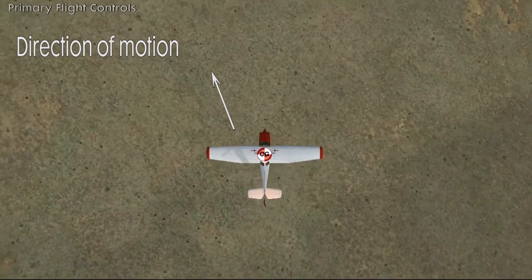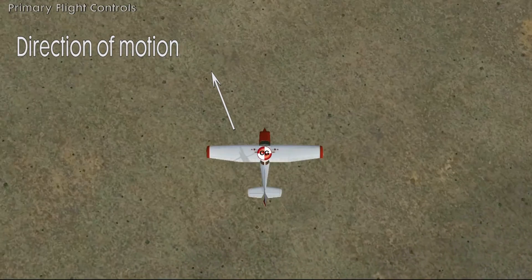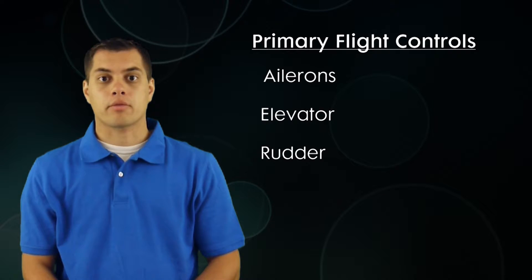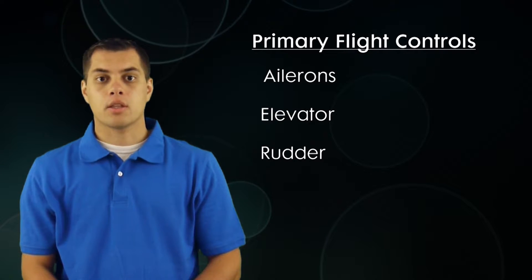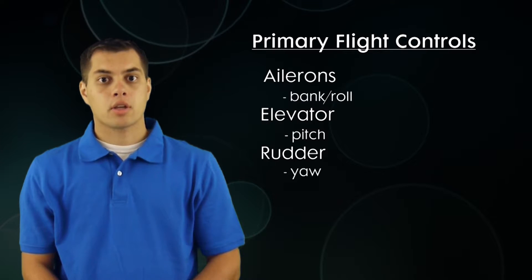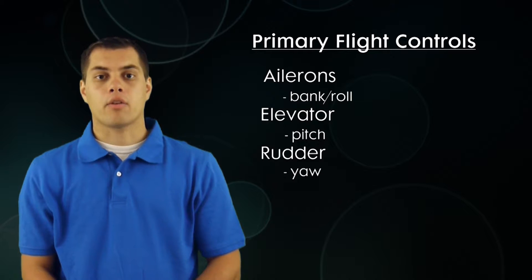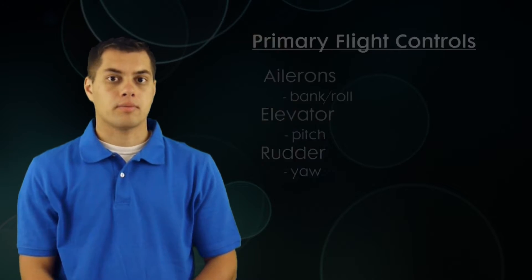That might seem useless, but just wait until we talk about crosswind landings. The three flight controls we talked about are called the primary flight controls — you absolutely need them in order to fly the airplane. The ailerons help with bank or roll, the elevator pitches the nose up and down, and the rudder yaws the airplane left and right.